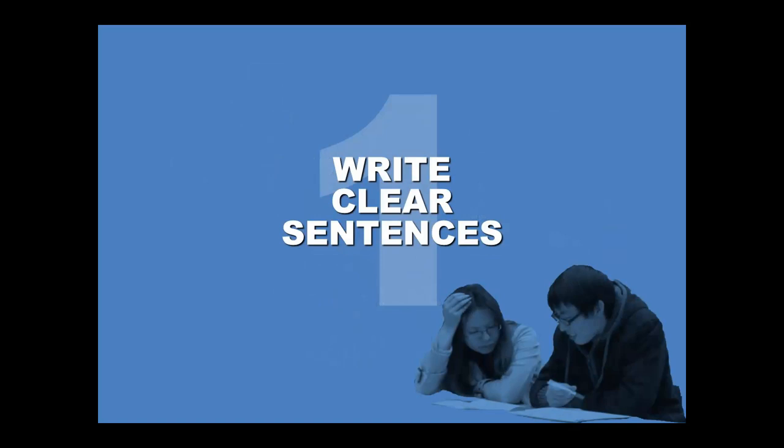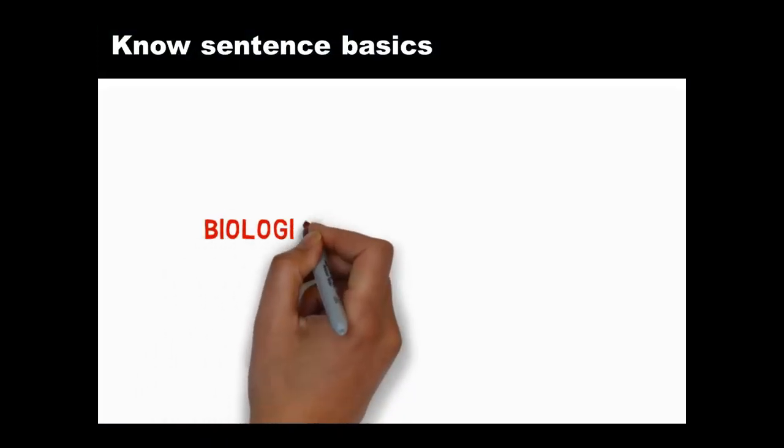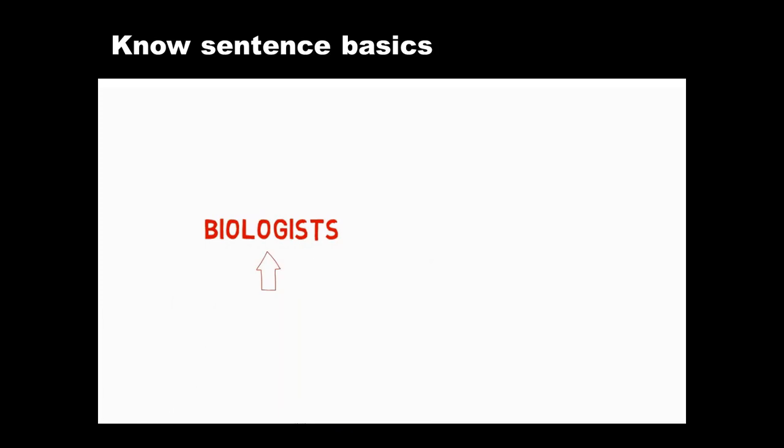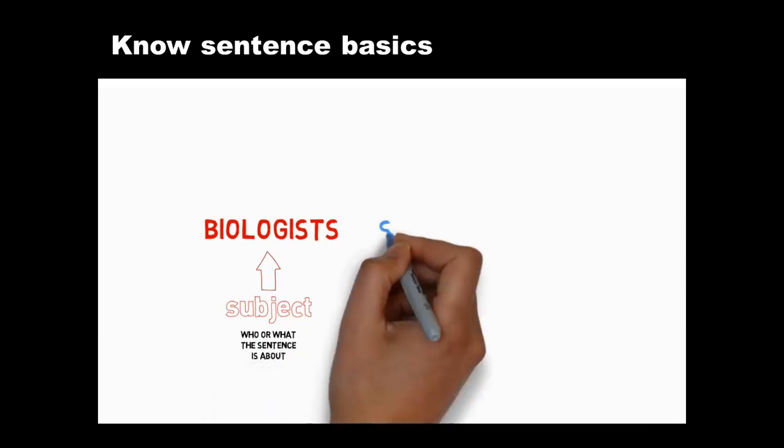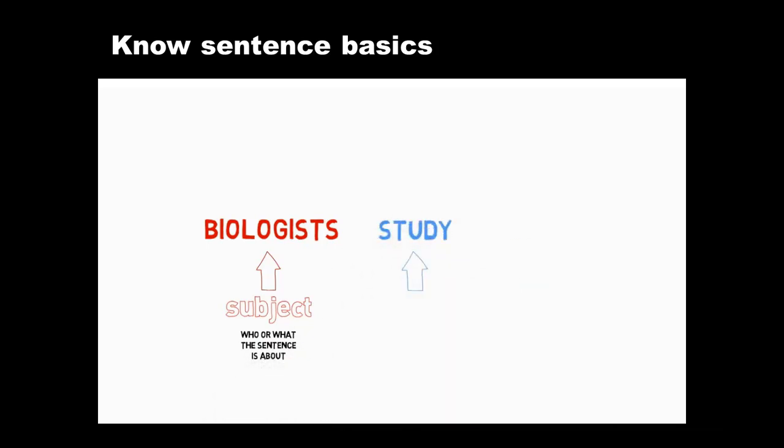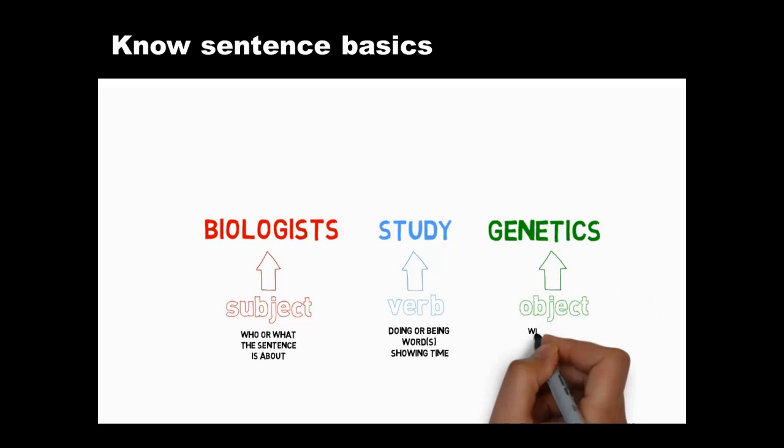Let's begin with writing clear sentences. We'll start with the basics of clear simple sentences, then look at how to vary what we write. To write a clear sentence, first indicate the subject early on. The subject tells readers who or what the sentence is about. Second, follow the subject swiftly with a complete verb. Verbs are doing or being words. Complete verbs show past, future, or present time by changing their form. Third, if you need one, place an object straight after the verb. Objects tell readers who or what the verb is affecting.